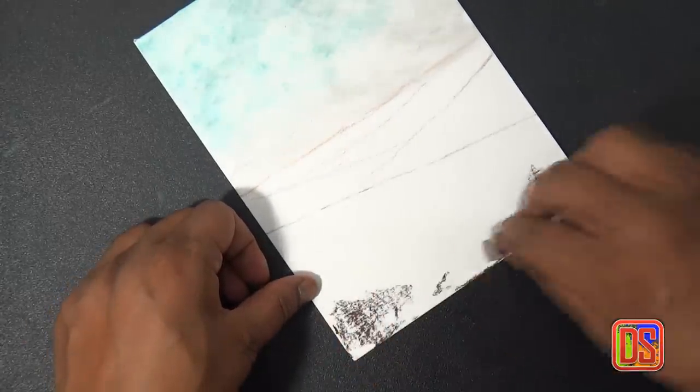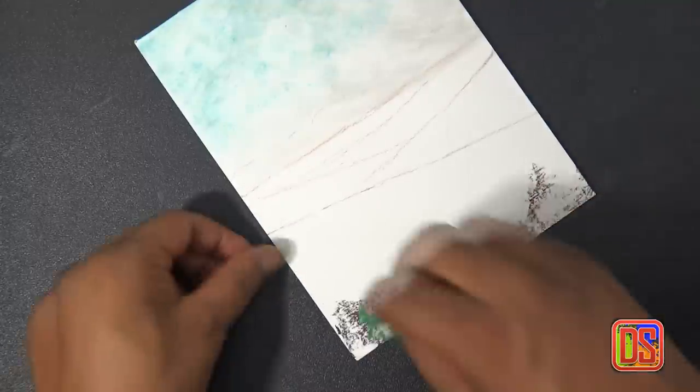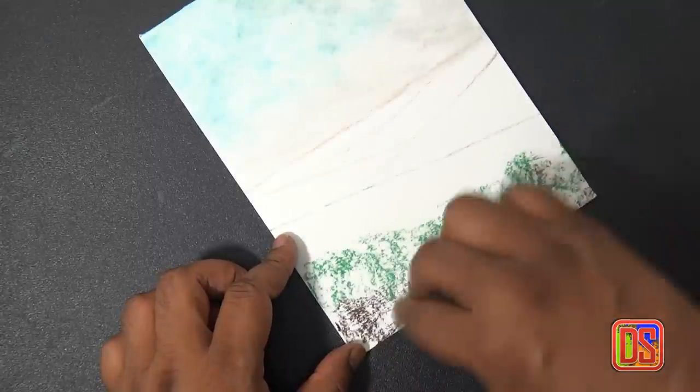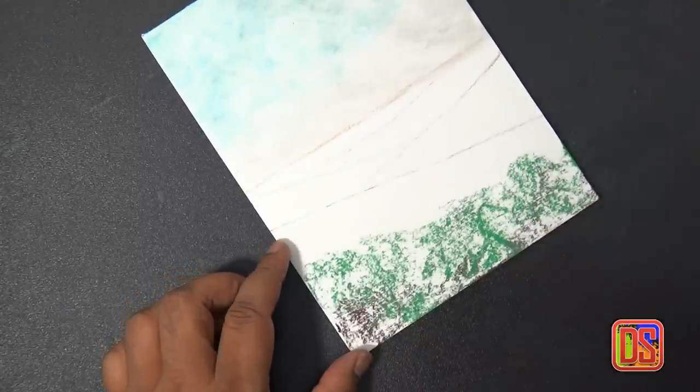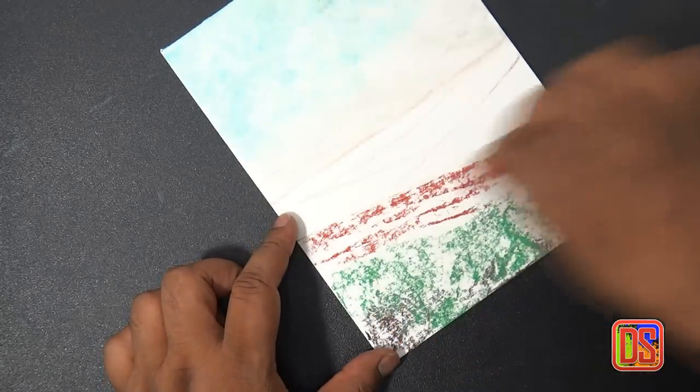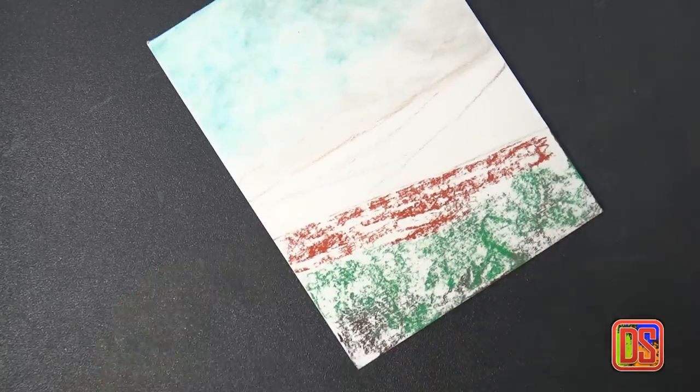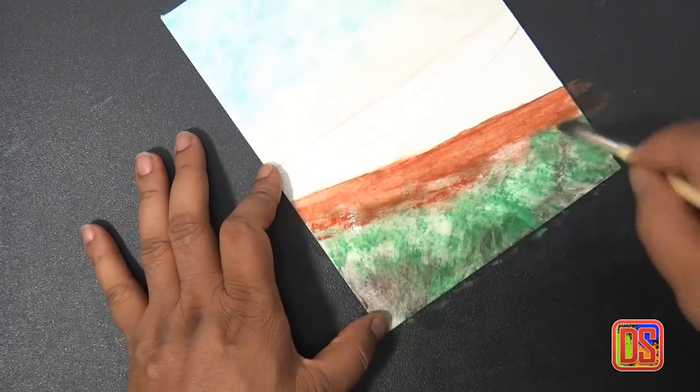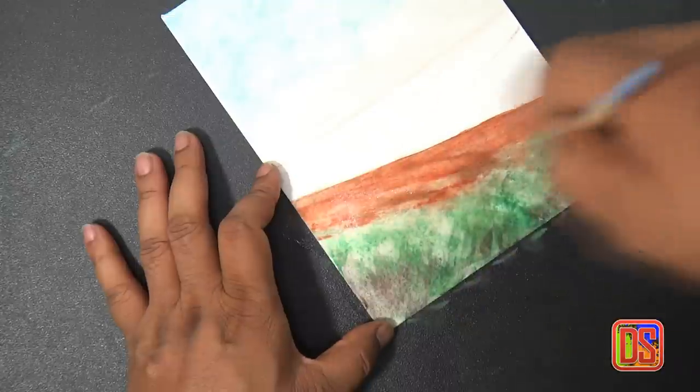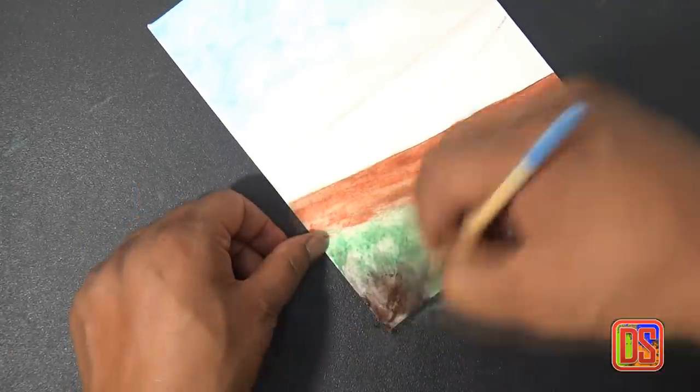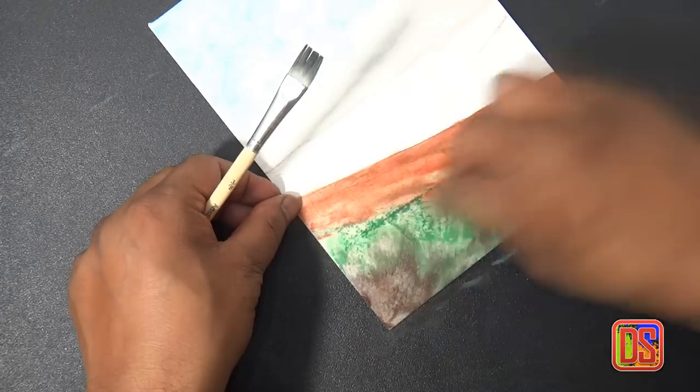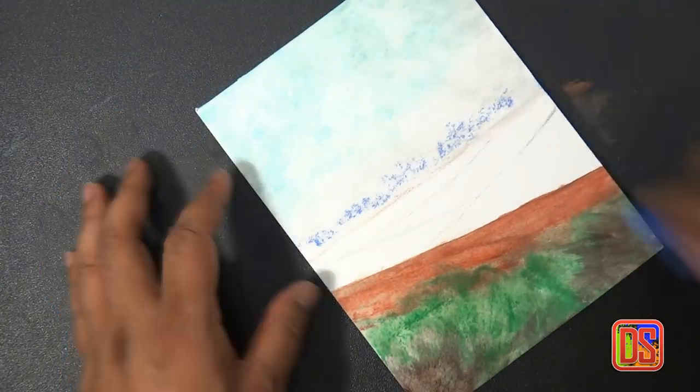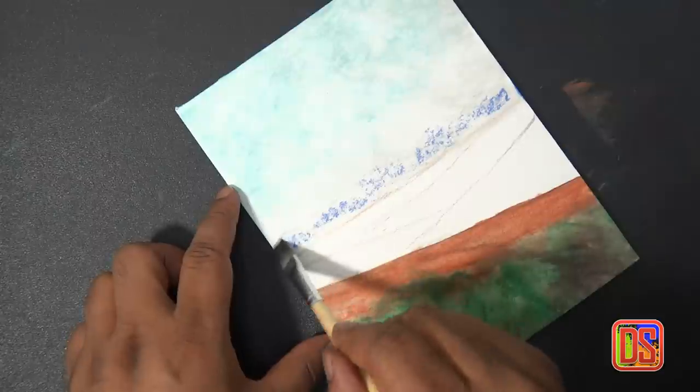While waiting on the sky to dry, we can work here on the foreground. Block in some colors like burnt amber, cinnabar green, and burnt sienna, then again wash it with rubbing alcohol using the brush. Here for the tree line, we're going to use ultramarine deep blue and wash it using the same method. It should be a very light shade as these trees are at distance.